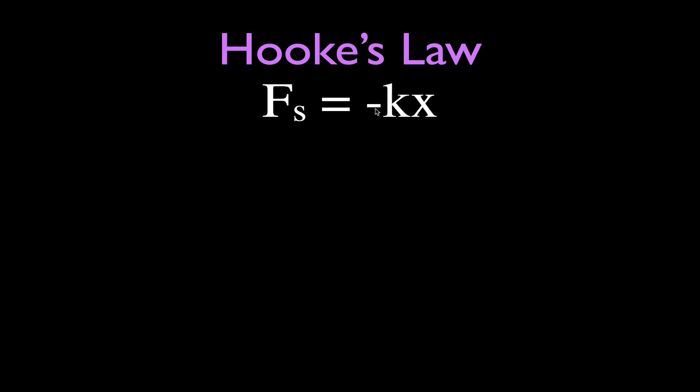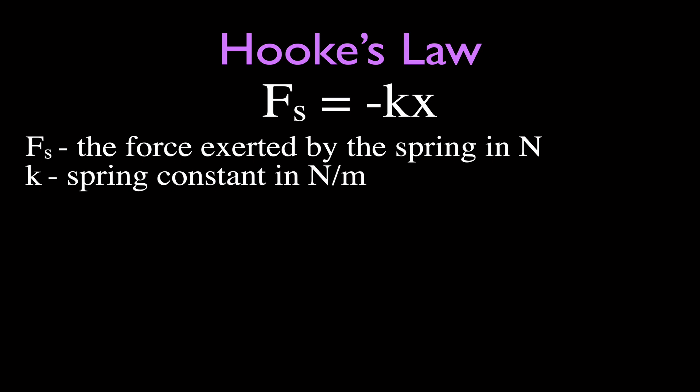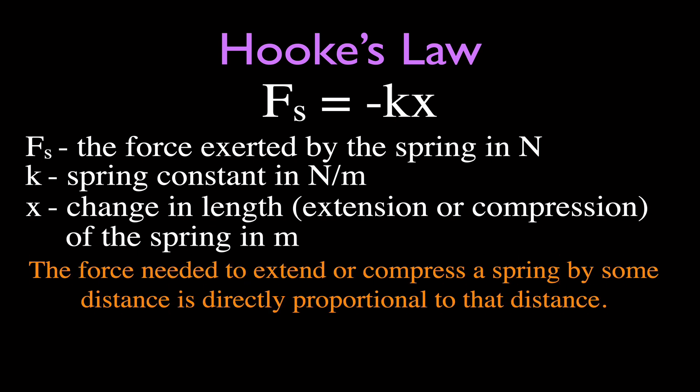It's not like the force is negative or less than zero. Now, Fs is the force exerted by the spring, measured in newtons. K is the spring constant, measured in newtons per meter. X is the change in the length — whether it's the extension (getting longer) or the compression (getting shorter) — and it must be measured in meters. What Hooke's Law really tells us is that the force needed to extend or compress a spring by some distance is directly proportional to that distance.